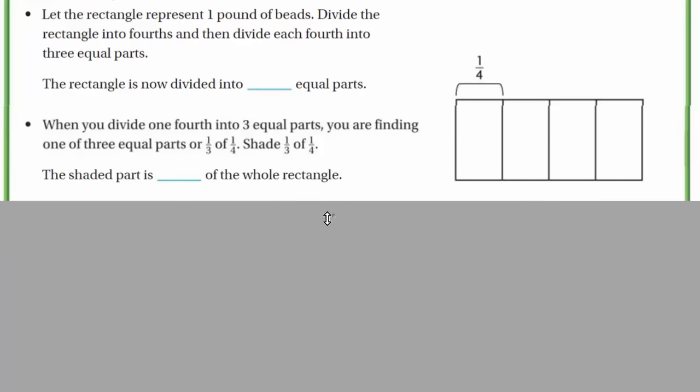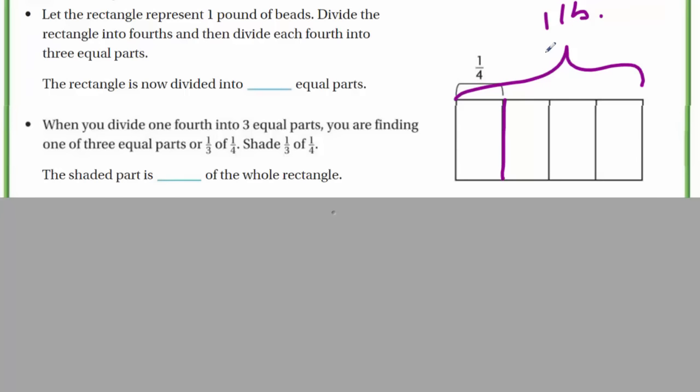So you have your quarter pound. This whole thing is one pound. And they're asking you to just mark off the quarter pound. Use the one whole. Makes it easier when it comes to fractions. Well, if we have three equal friends, you could do this any which way. I'll do it this way across. The rectangle is now divided into...